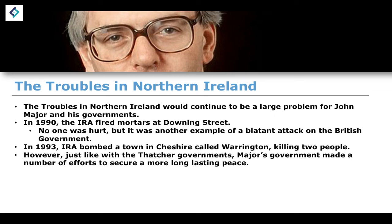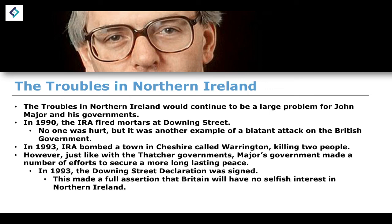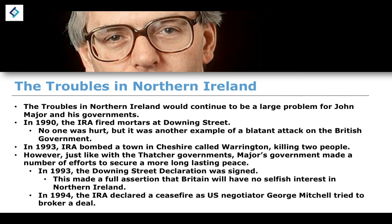Just like with the Thatcher governments, John Major made a number of efforts to try and secure a more long-lasting peace. We see a number of different declarations signed, the main one being the 1993 Downing Street Declaration, which made a full assertion that Britain had no selfish interest when it came to relationships with Northern Ireland.